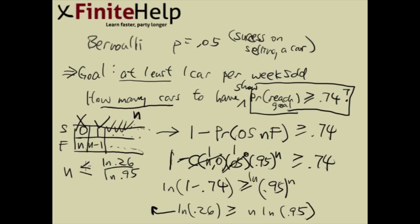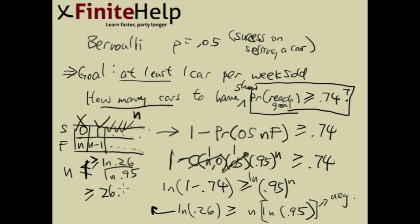One important thing: you have to change the direction of the inequality sign to greater than or equal to. Why? Because when you divide by a negative number in an inequality, you flip the sign. And the natural log of 0.95 is a negative number. So when we divide, the sign switches, and N becomes greater than: natural log of 0.26 divided by natural log of 0.95, which equals 26.26.